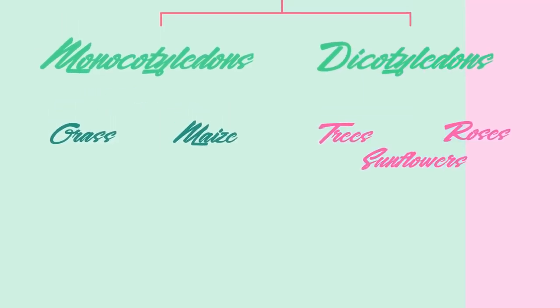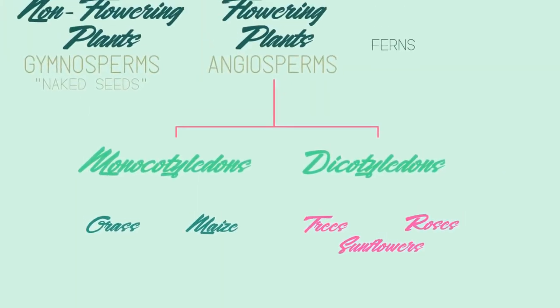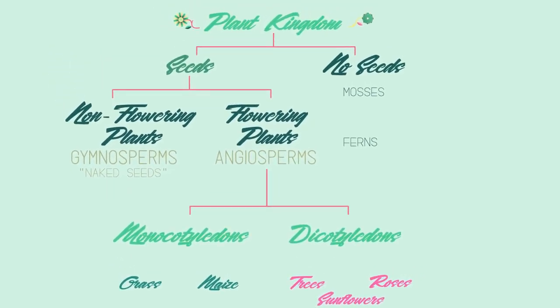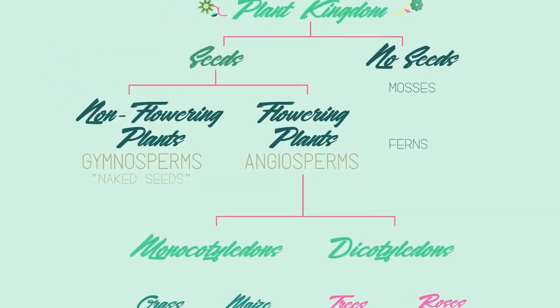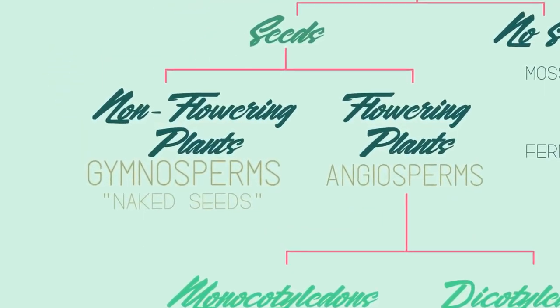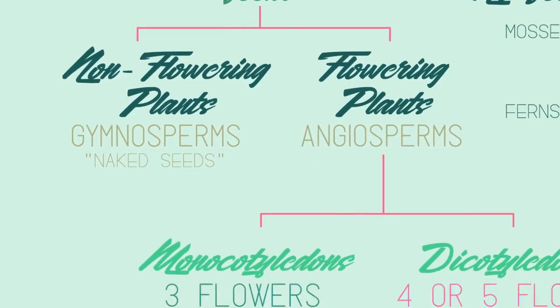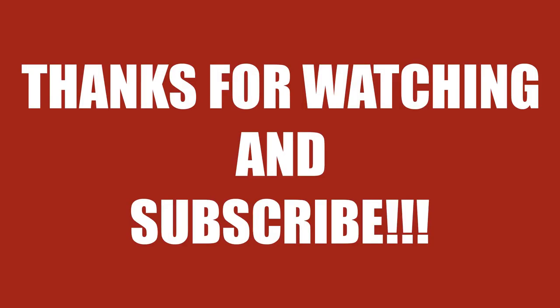So there we have some of the ways plants are classified. You need to remember that non-flowering plants are called gymnosperms and have naked seeds, and then flowering plants are called angiosperms, which can be separated into monocots and dicots.